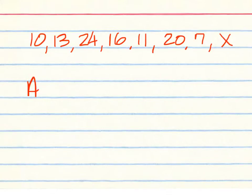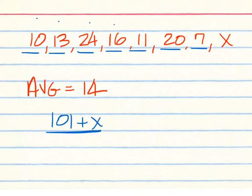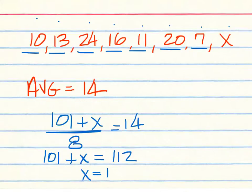In this one, we have 10, 13, 24, 16, 11, 20, 7, and X. The average we are going for is 14. What needs to be the missing number? Solution for this one. We have 10, 23, 47, 63, 74, 94, 101. And that's plus X. And a total of 1, 2, 3, 4, 5, 6, 7, 8 numbers. And we need an average of 14. So, we'll have 101 plus X. And that would be 112 over here. So, your answer should come out to be 11.